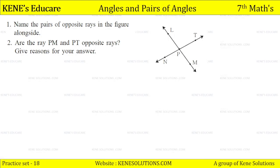Question 1 is: name the pairs of opposite rays. We have to write the opposite rays in the figure alongside. Here we have to tell the opposite rays. And the second question is: are the rays PM and PT opposite rays? Give reason for your answer.